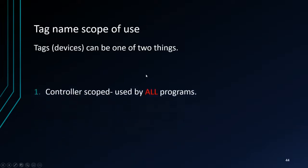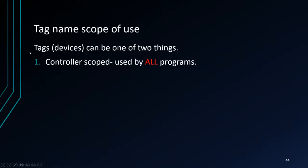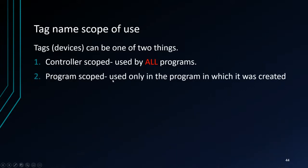Tags can be one of two types: controller-scoped tags, which can be used by all controllers, or program-scoped tags, which can only be used within the program in which they were created. In a DCS program there will be a folder for controller tags and a folder for program tags. Where you place the tag name determines who can use that address. Program-scoped tags are only accessible to the program that generated them.